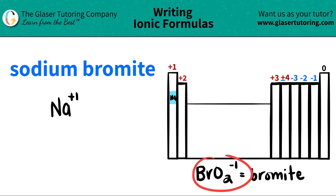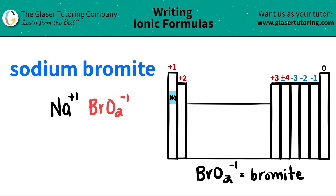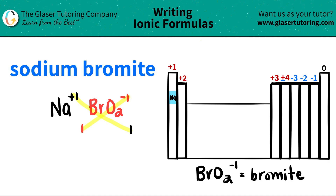So bromide is BrO2 with a negative one. Now, since we have the charges, all we have to do is crisscross them to figure out how many of each component I need. So this plus one crisscrosses down, telling me that I need one bromide. And this negative one crisscrosses down, telling me I need one sodium.